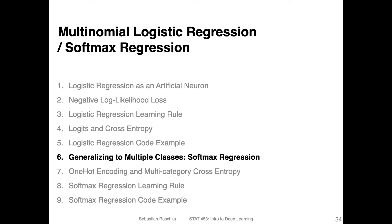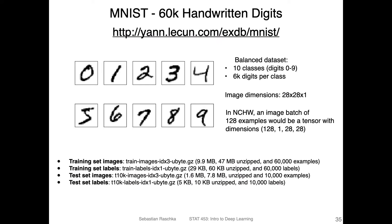Let's now generalize the concept of logistic regression to multiple classes. This is also known as softmax regression, or sometimes also called multinomial logistic regression.